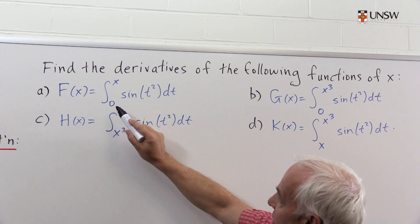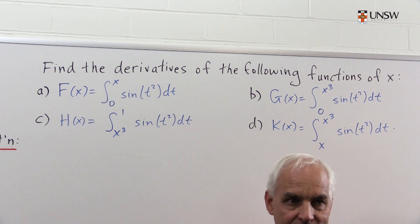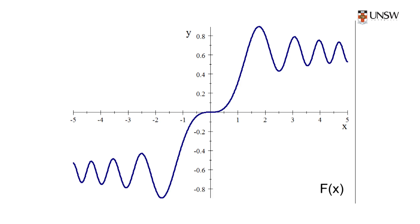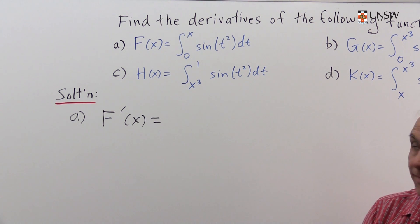First, F(x) equals the integral from 0 to x of sin(t²) dt. Here's how we take the derivative. It's a simple application of the fundamental theorem of calculus. So F'(x) is,